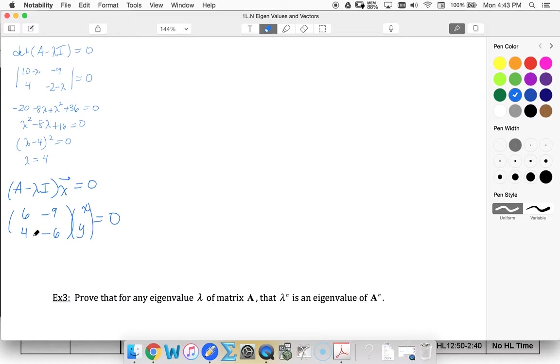Okay, I can see that these rows are multiples of each other so I can pick just one of them. So 6X minus 9Y is 0. This means that Y is equal to 6 over 9 X, or two-thirds X.